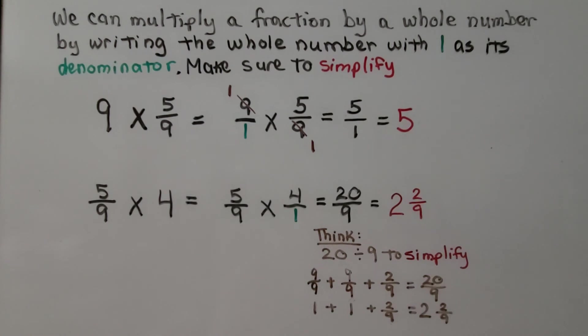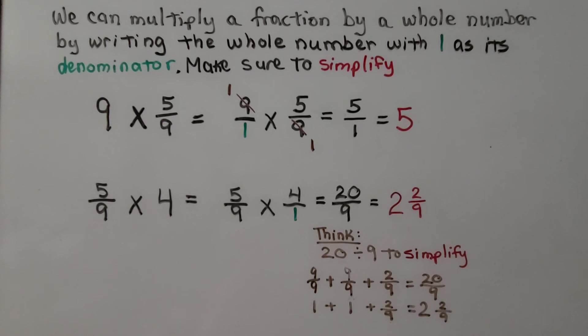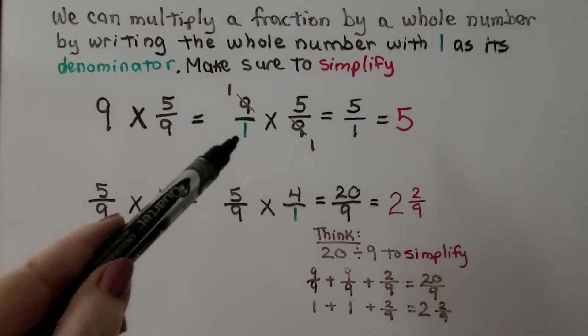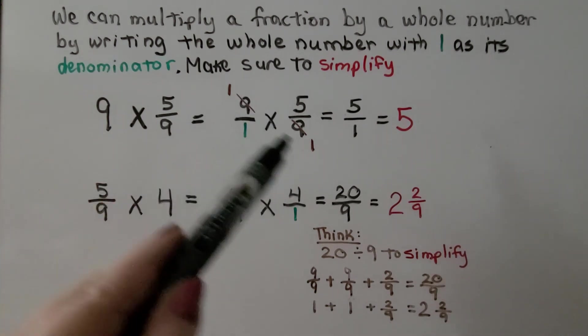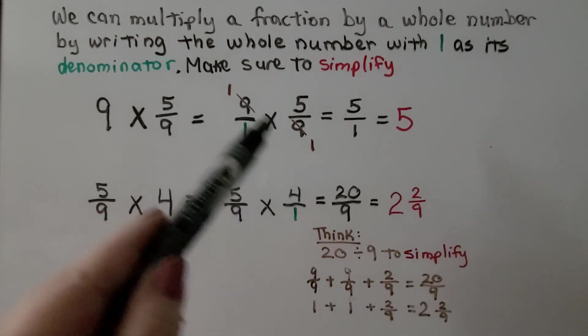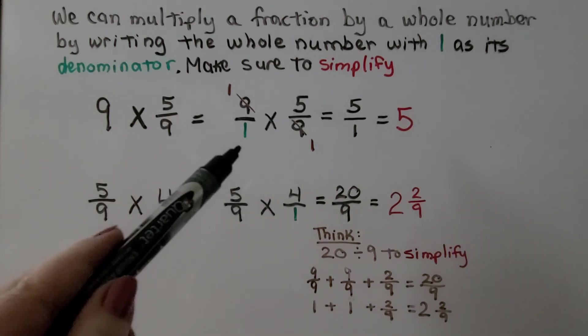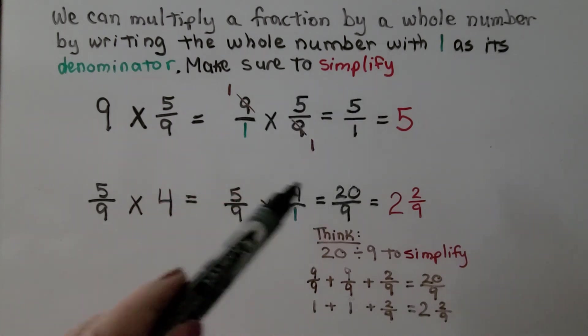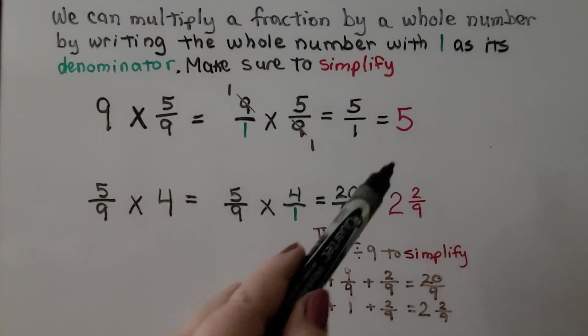We can multiply a fraction by a whole number by writing the whole number with 1 as its denominator. Make sure to simplify when finished. Here we have 9 times 5 ninths. We rewrite this whole number 9 as 9 over 1. Now we have 9 over 1 times 5 ninths. We can cross cancel these as a 1 and a 1, and leave these alone. We have 1 times 5 is 5 and 1 times 1 is 1. We know 5 over 1 is 5 whole.